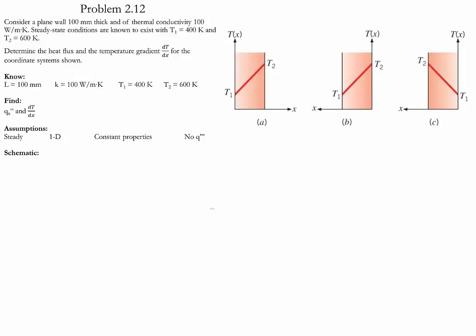Problem 2.12 is a one-dimensional steady conduction case with constant properties and no internal heat generation. We have a wall of length L with prescribed conductivity and two temperature values, one at each side.